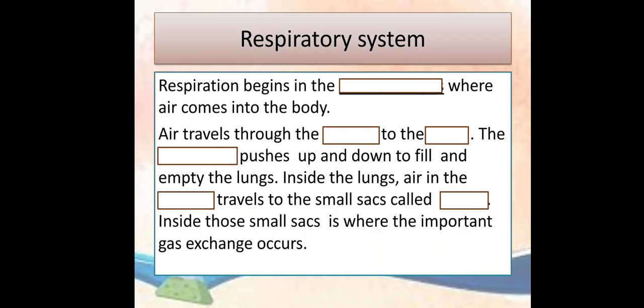The passage is: Respiration begins in the dash where air comes into the body. Air travels through the dash to the dash. The dash pushes up and down to fill and empty the lungs. Inside the lungs, air in the dash travels to the small sacs called dash. Inside those small sacs is where the important gas exchange occurs.